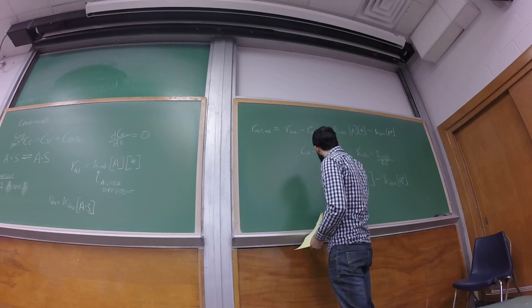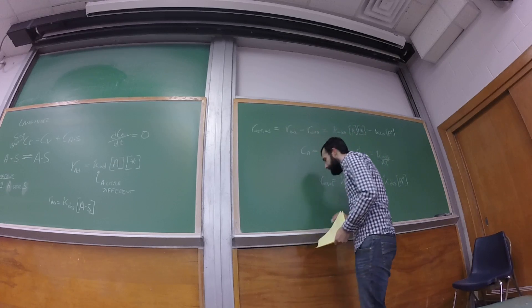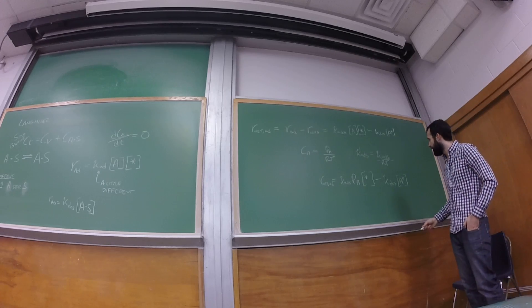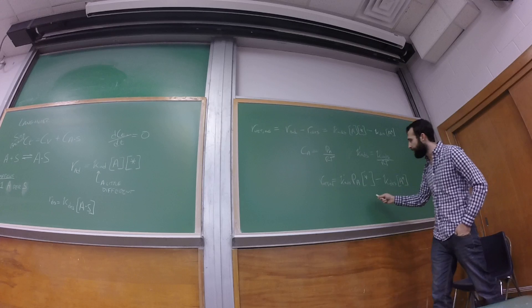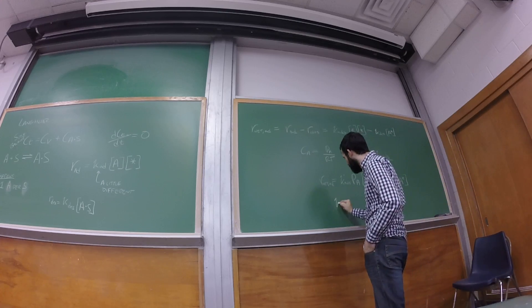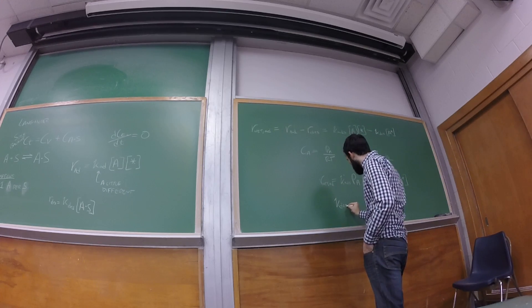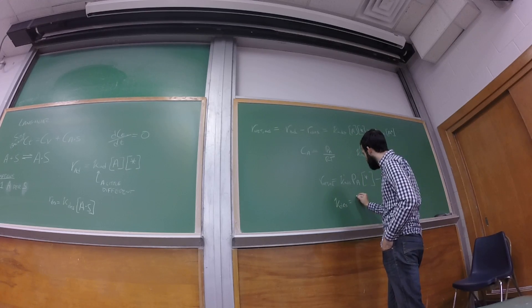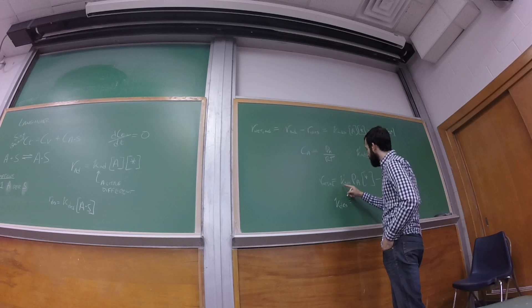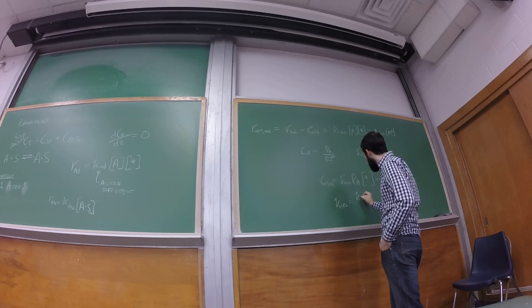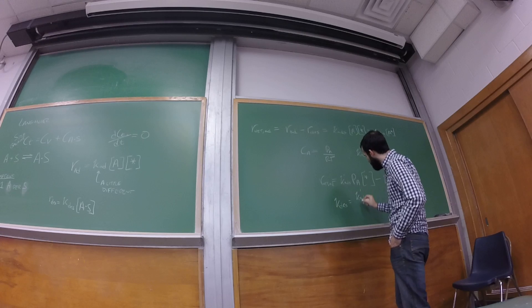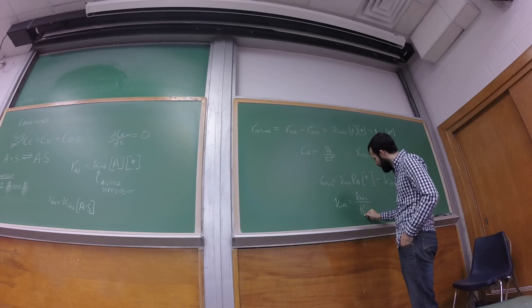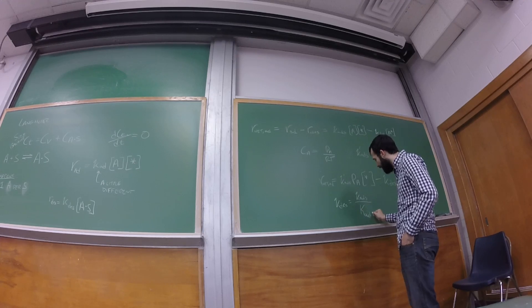Creation of adsorbs sites. Another simplification that we'll often make, especially in Fogler, instead of writing the desorption rate constant, I can write the desorption rate constant is equal to the adsorption rate constant divided by the equilibrium constant for adsorption.